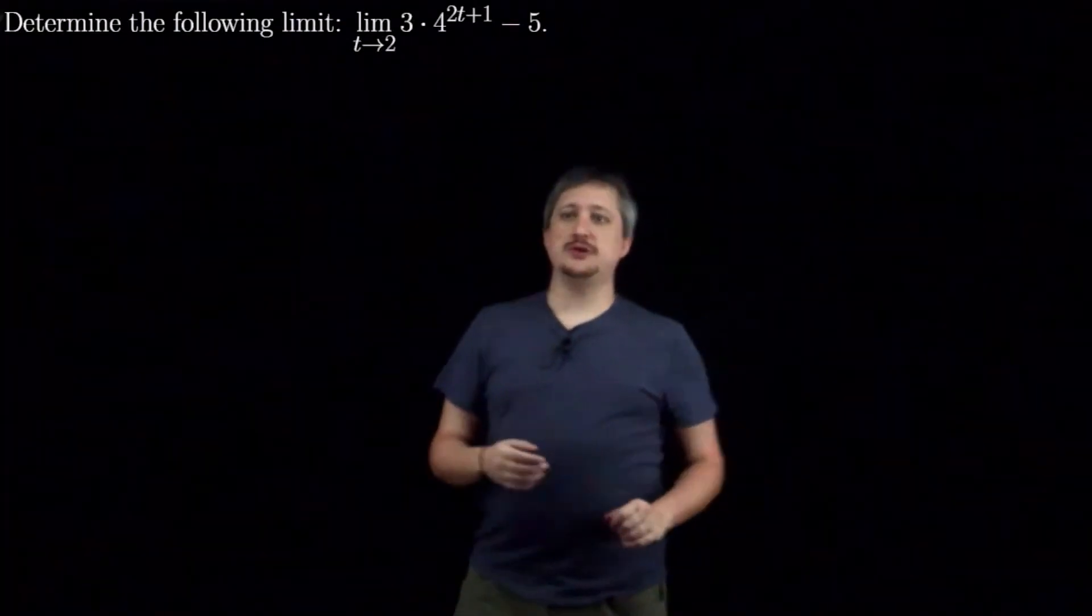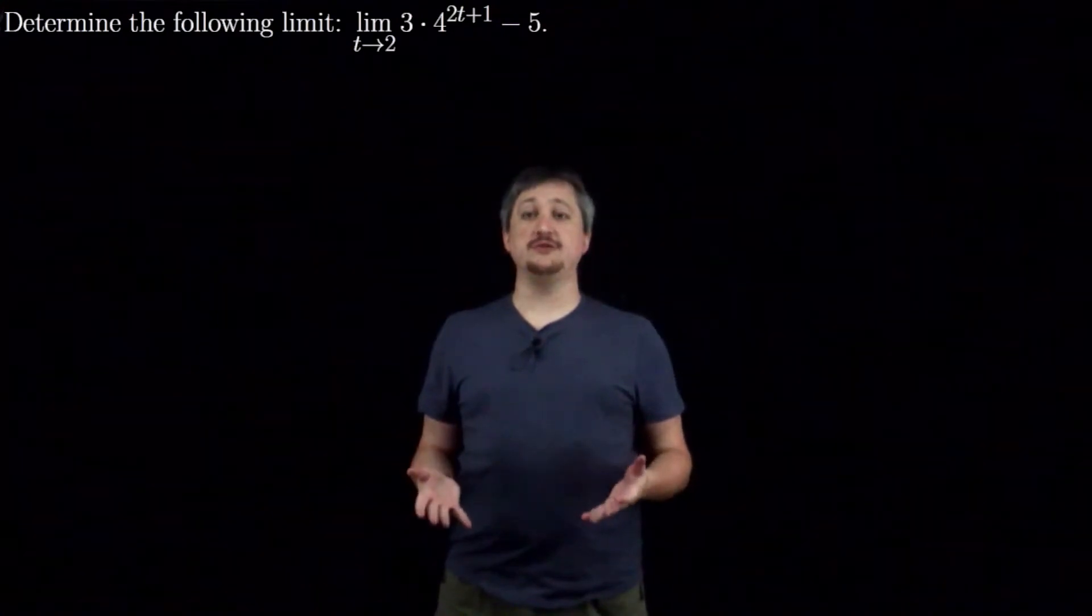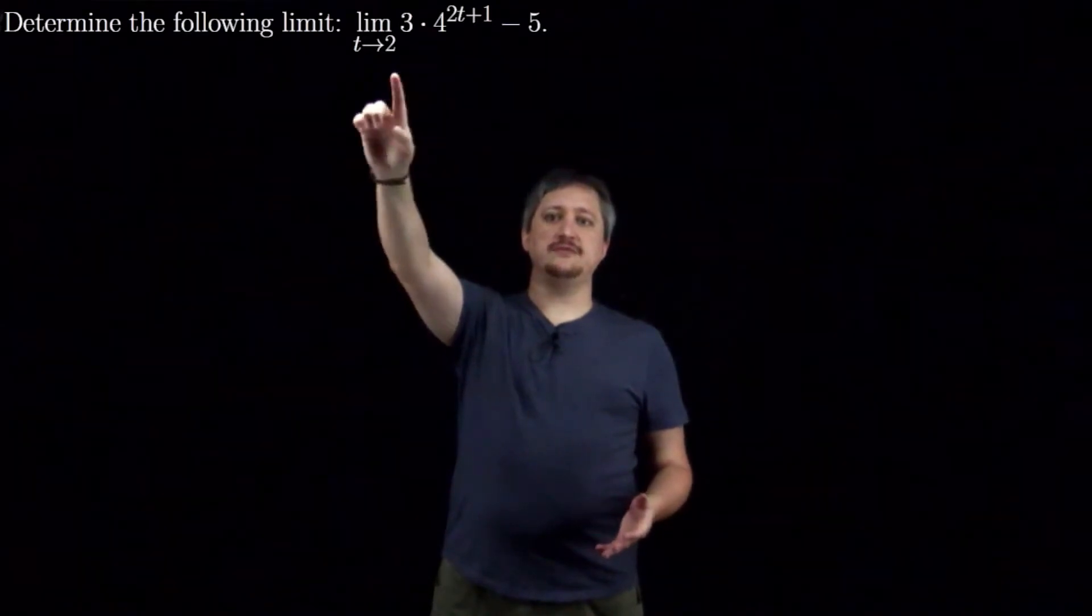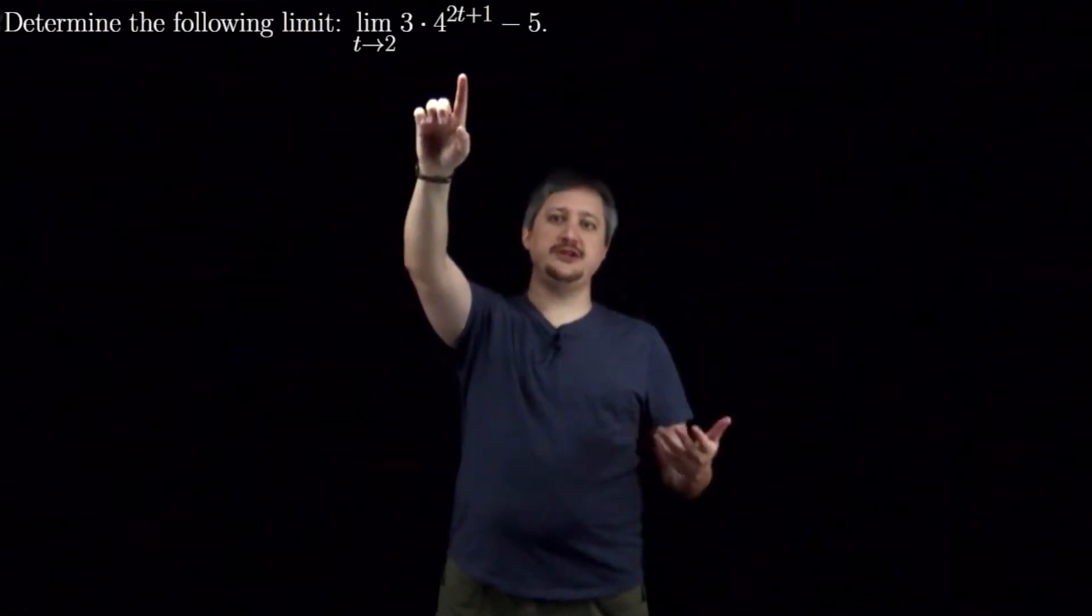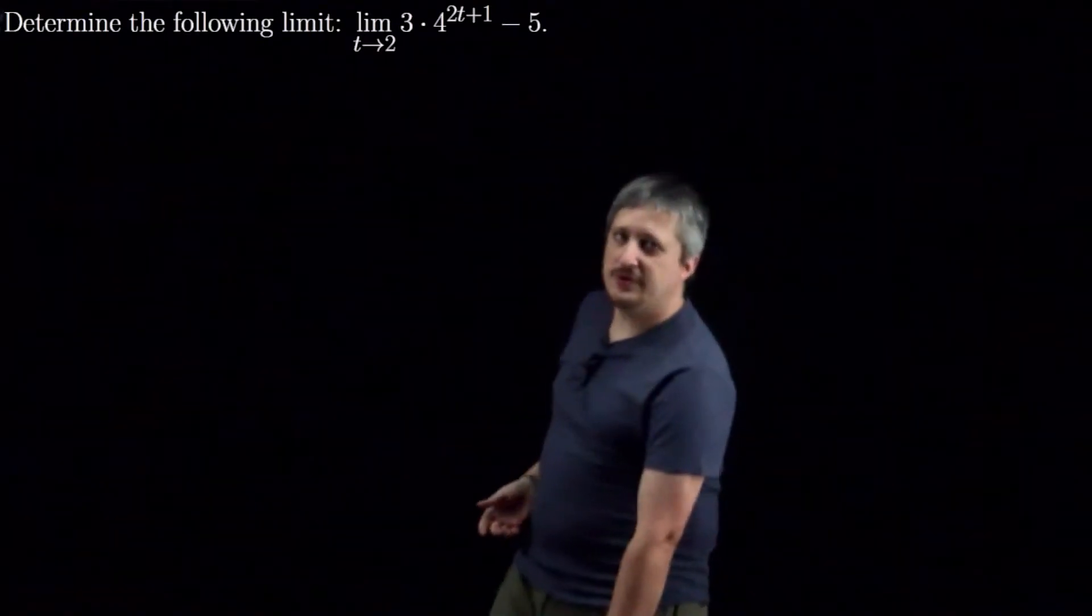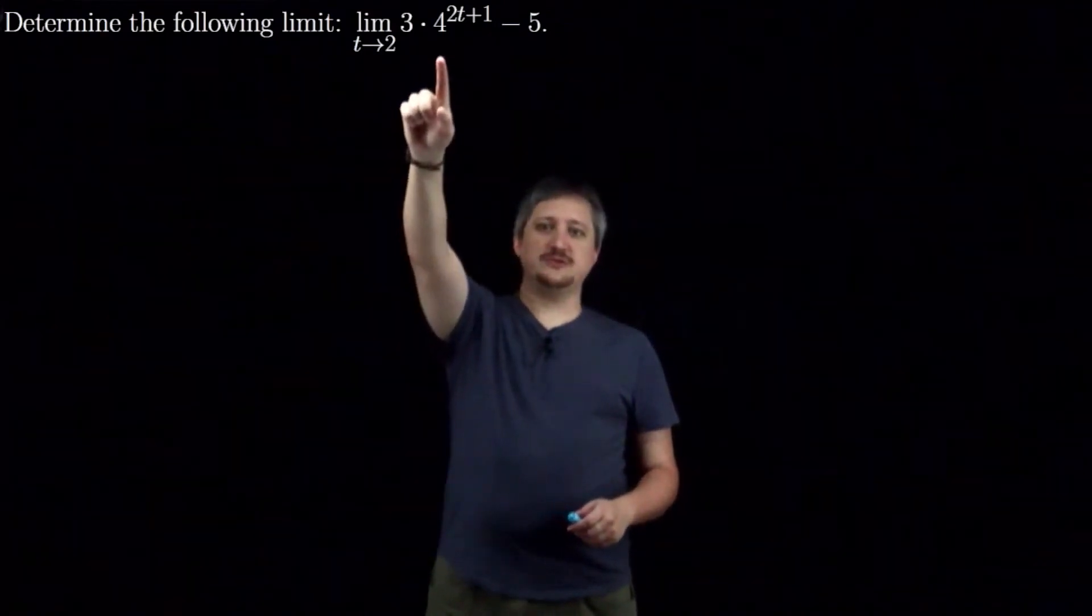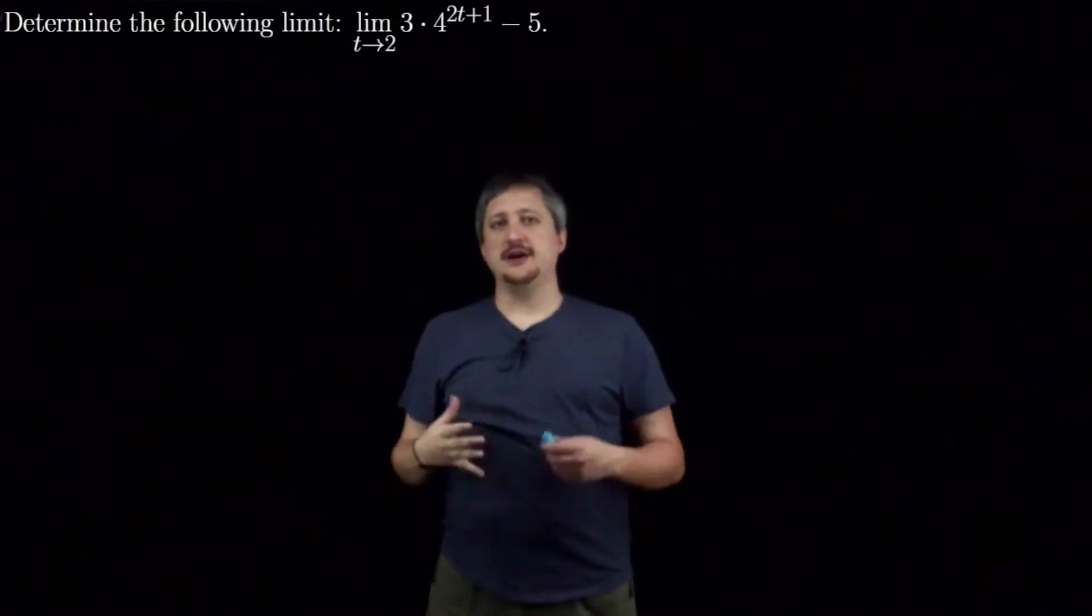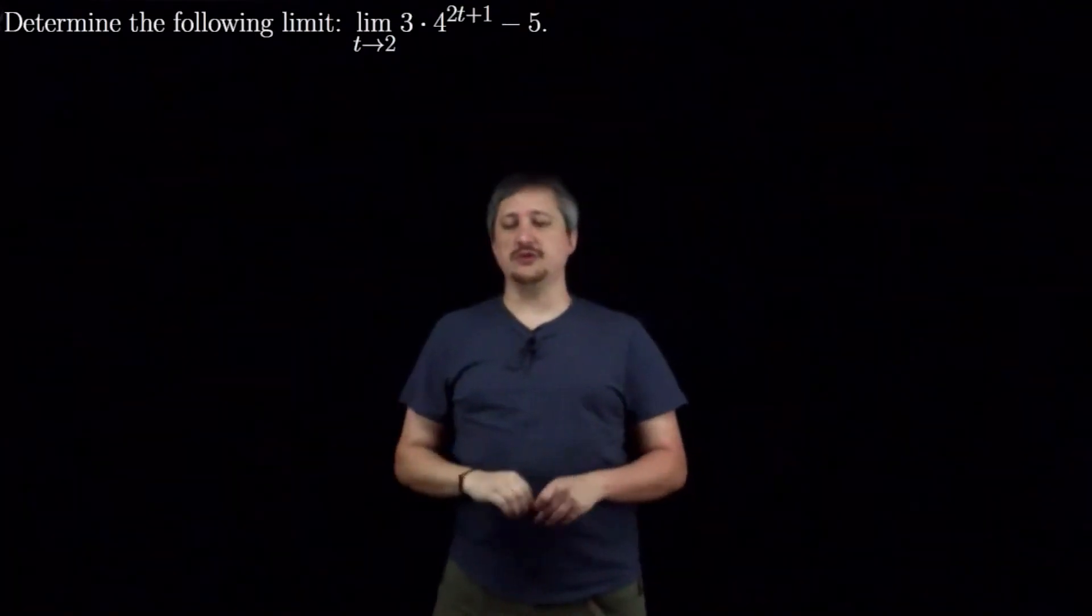In this video, we're going to be doing another example of computing a limit for a continuous function. So here we have this limit as t goes to 2 of the continuous function 3 times 4 to the 2t plus 1 all minus 5. So again, remember that the exponential function, which is sort of the parent function type here, that's 4 to something, that's going to be defined for all real numbers and continuous for all real numbers.